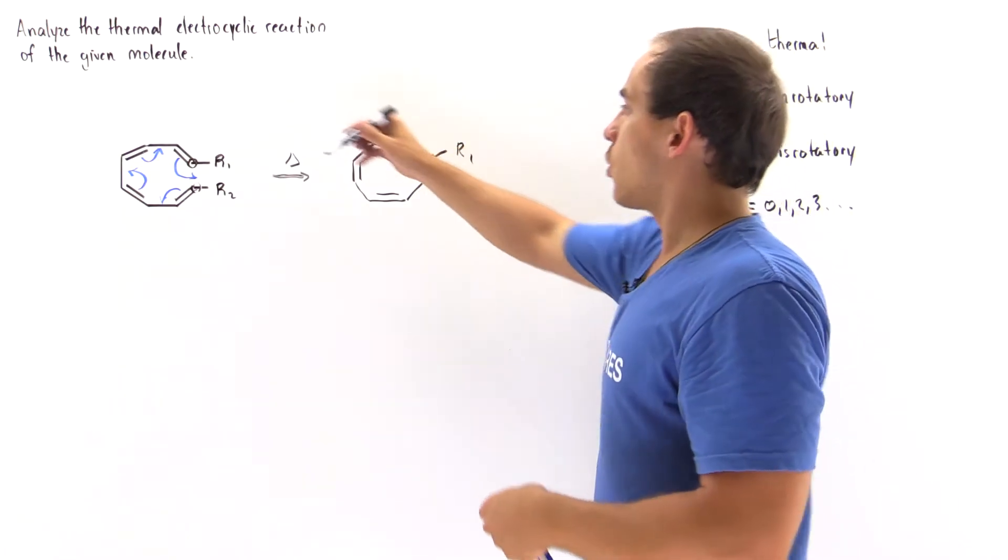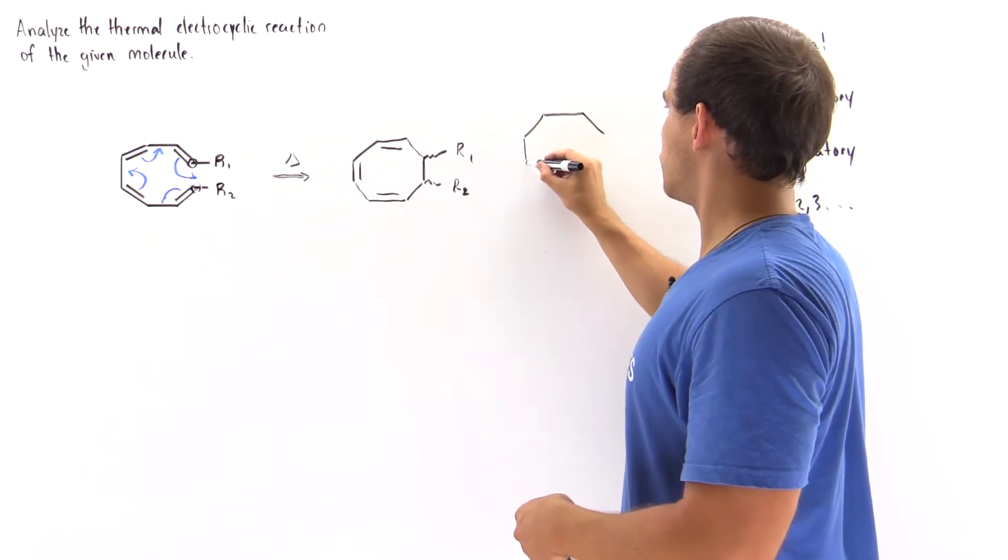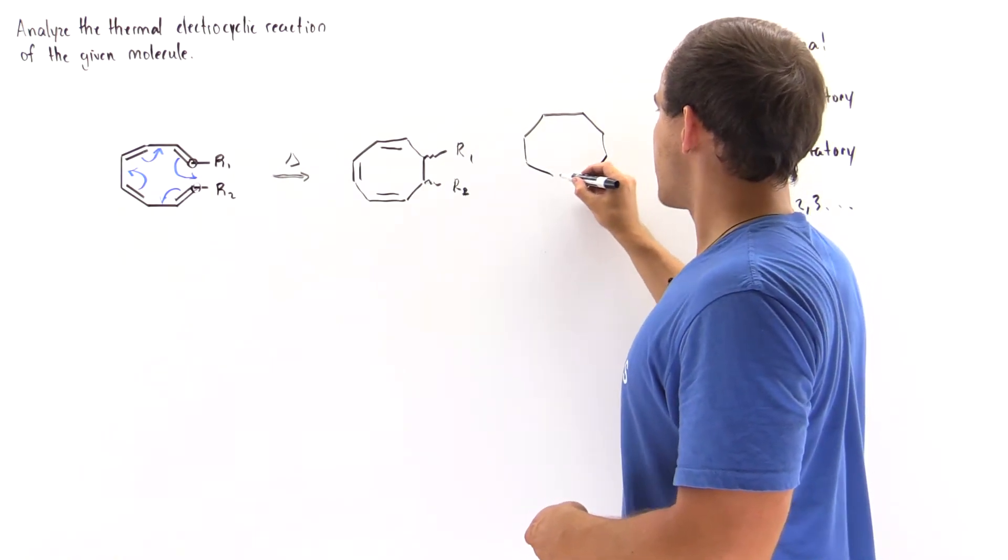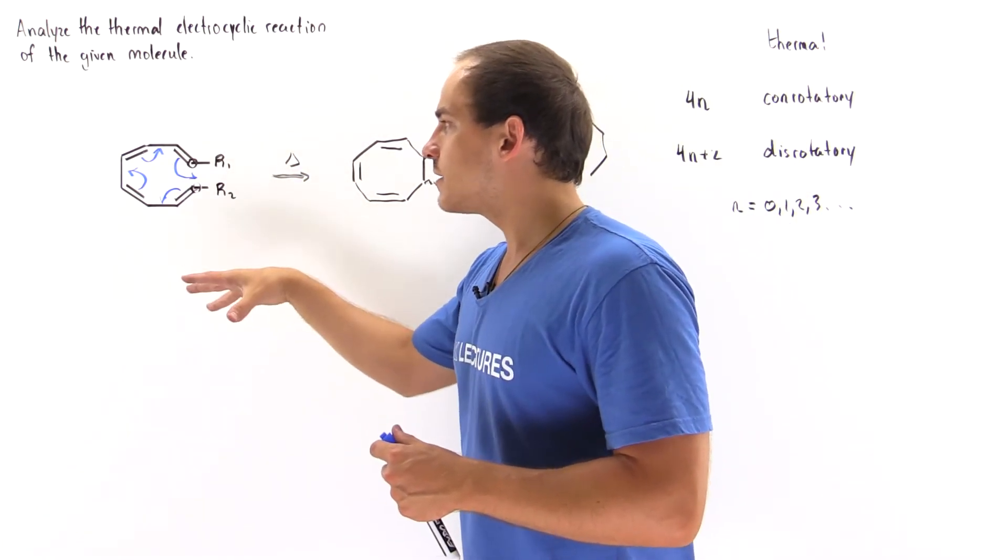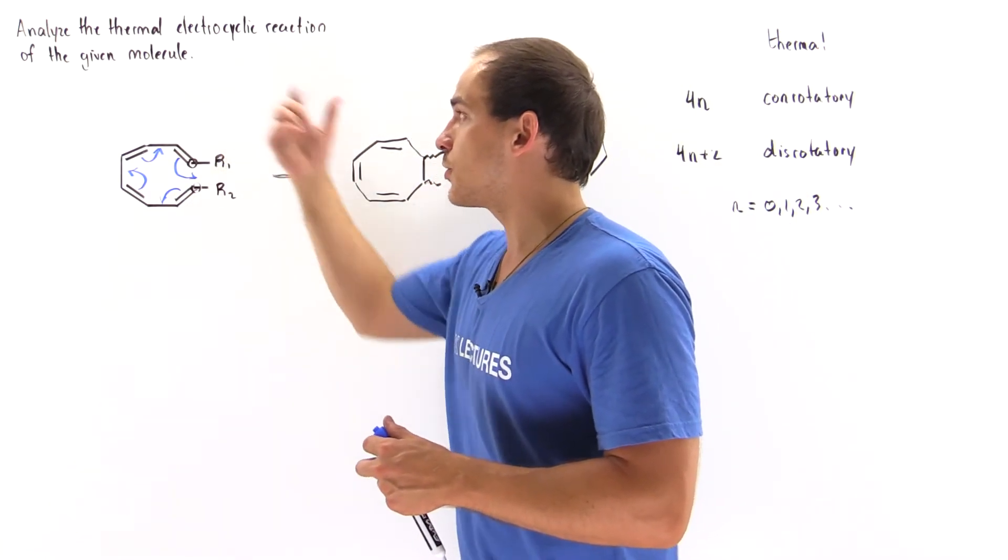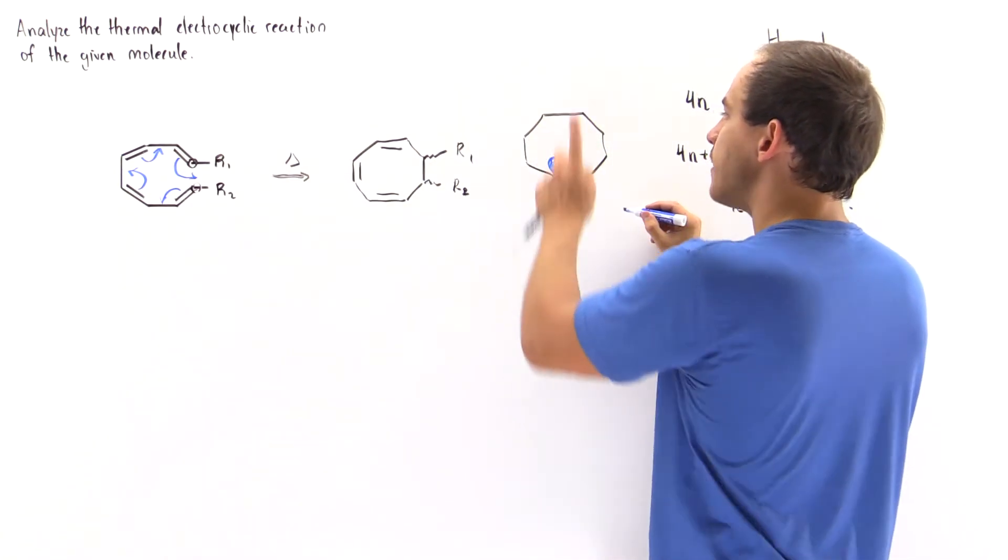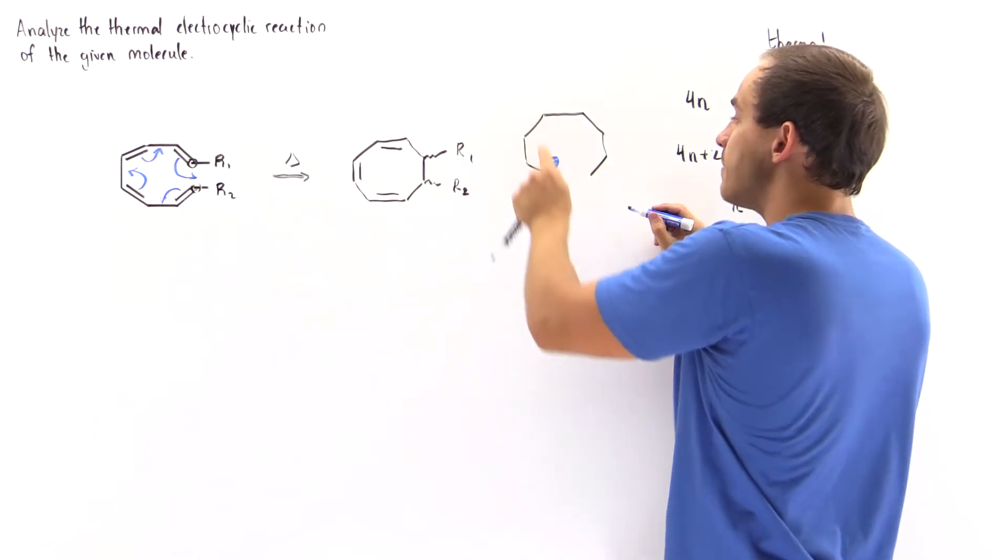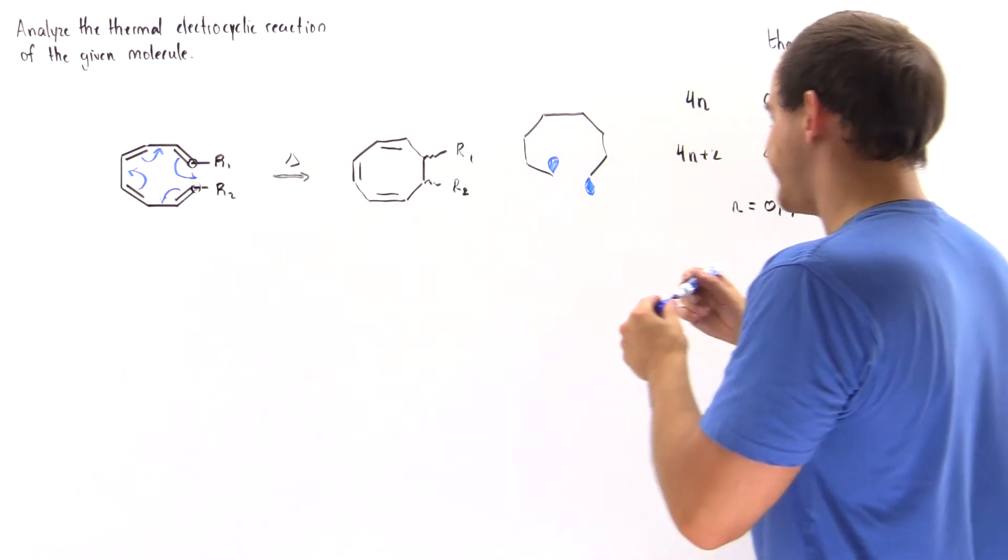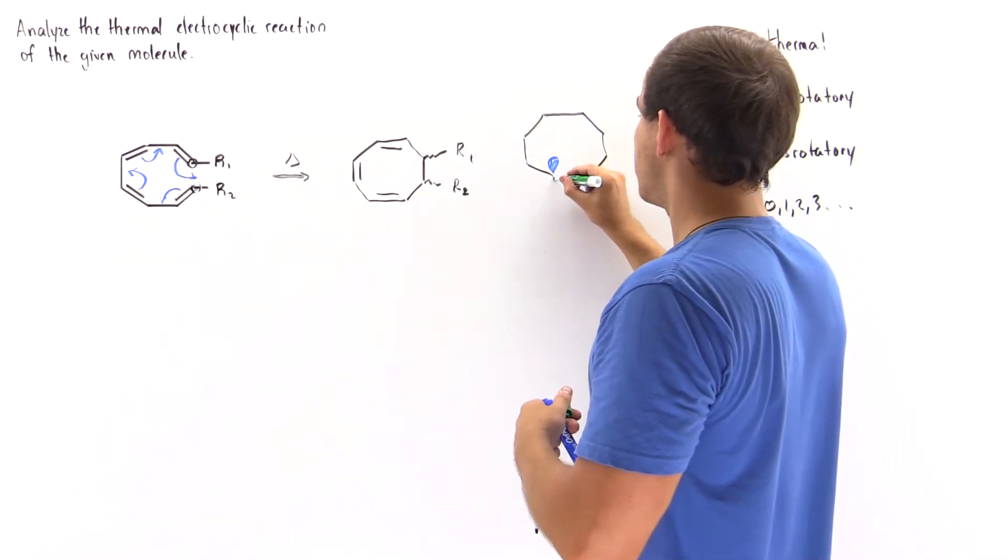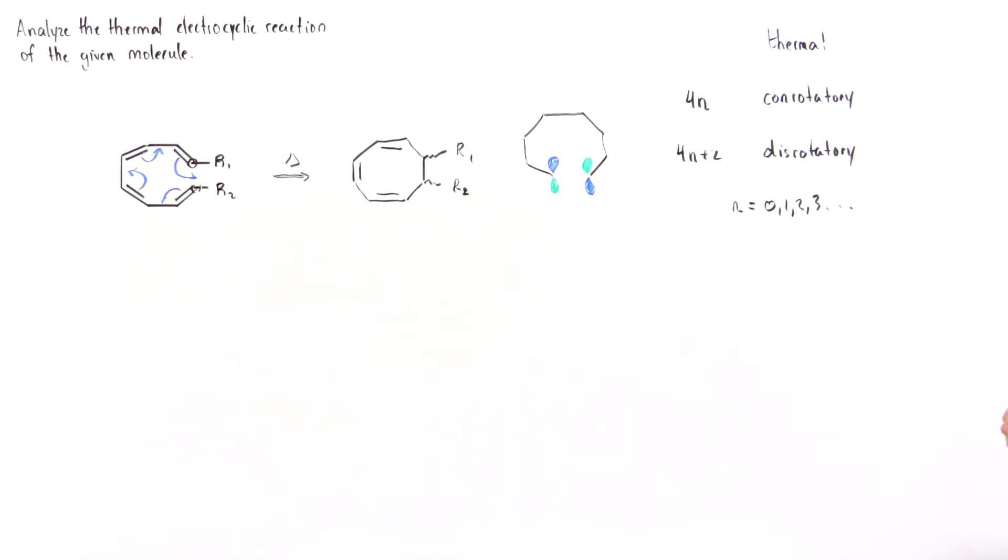So let's draw this molecule right here. We have the molecule and we have our two orbitals. Now the highest occupied molecular orbital under thermal conditions contains a negative region on the top pointing to the top on the first carbon and a negative region pointing downward. The positive here points downward, the positive here points upward.